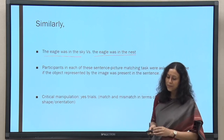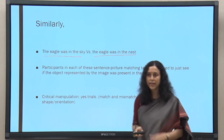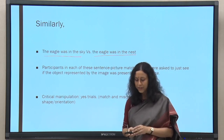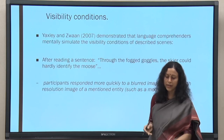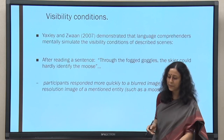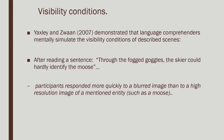In this case also, the critical manipulations in yes trials were in terms of shape and orientation. Many other similar studies found the same kind of answer. Basically, the sentence comes first as a prime and then the matching object comes as a target — it is a sequential trial where one thing follows another.